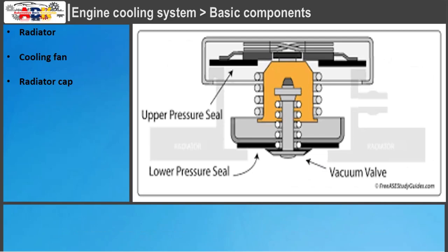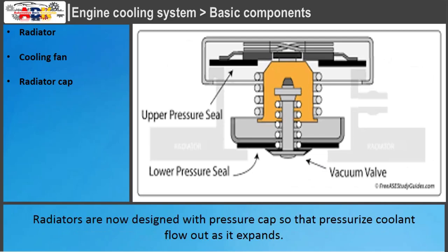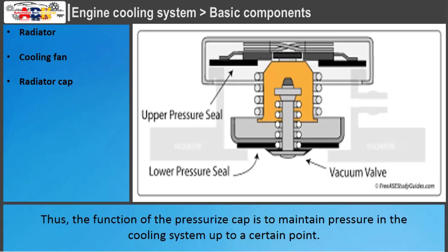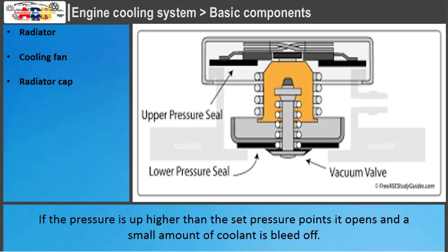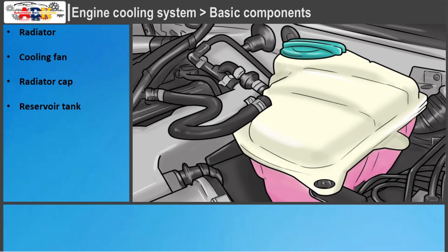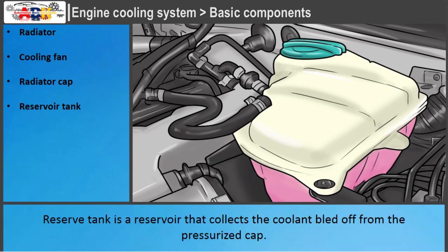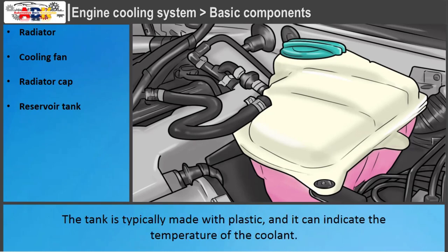Radiator cap: Radiators are designed with a pressure cap so that pressurized coolant flows out as it expands. The function of the pressurized cap is to maintain pressure in the cooling system up to a certain point. This cap features a spring valve calibrated to the correct pounds per square inch. If the pressure rises higher than the set pressure point, it opens and a small amount of coolant is bled off. Reservoir Tank: The reserve tank collects the coolant bled off from the pressurized cap. It is typically made with plastic and can indicate the temperature of the coolant.